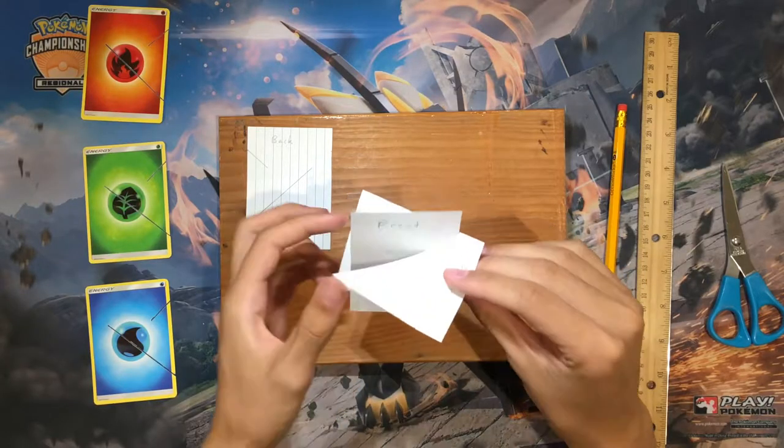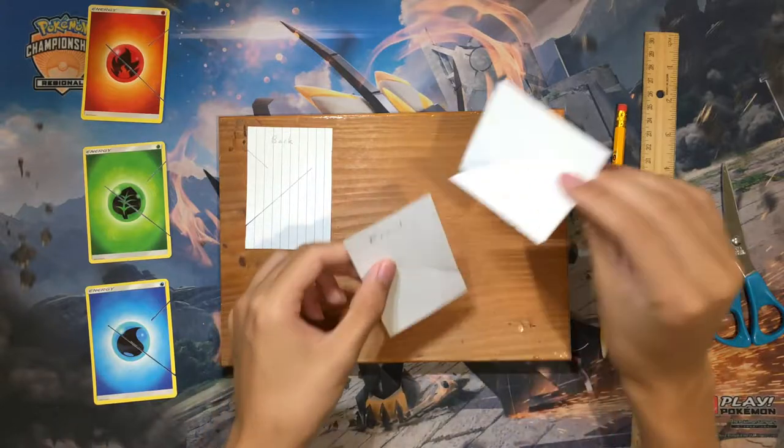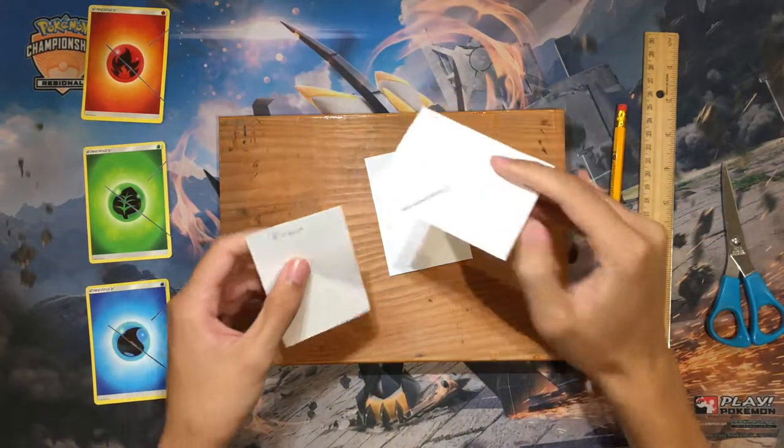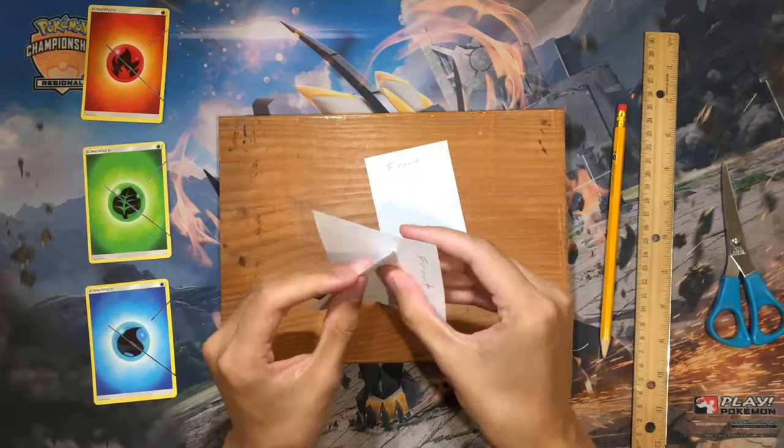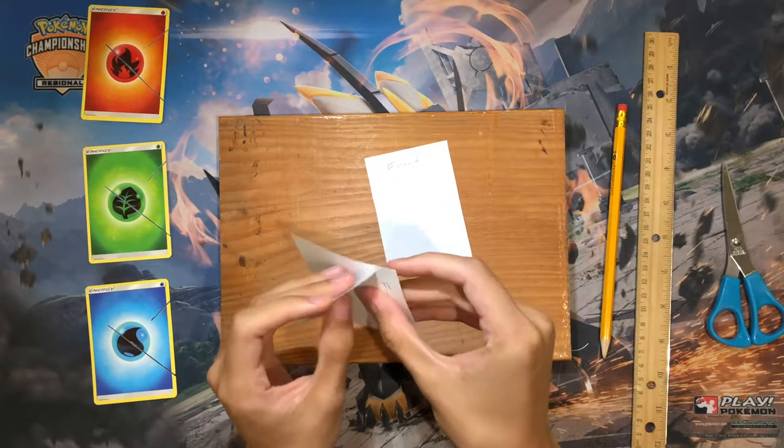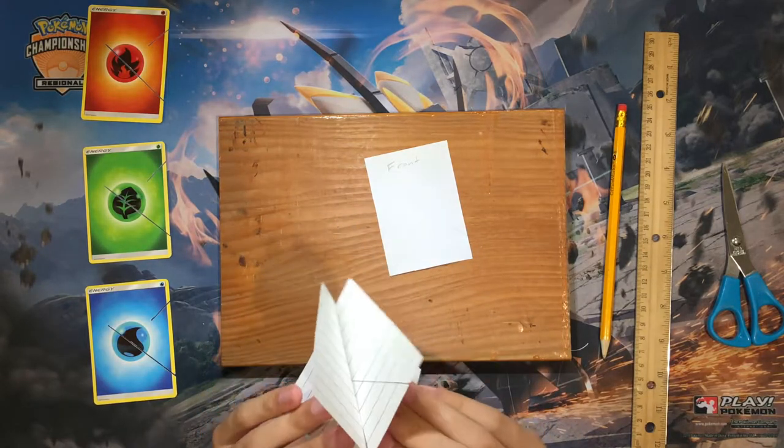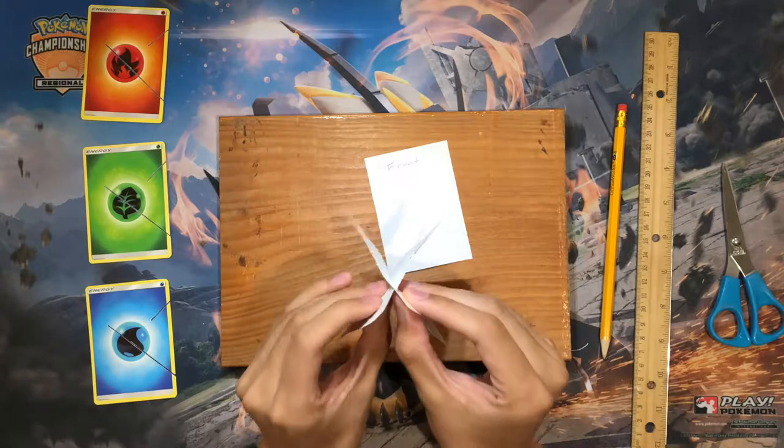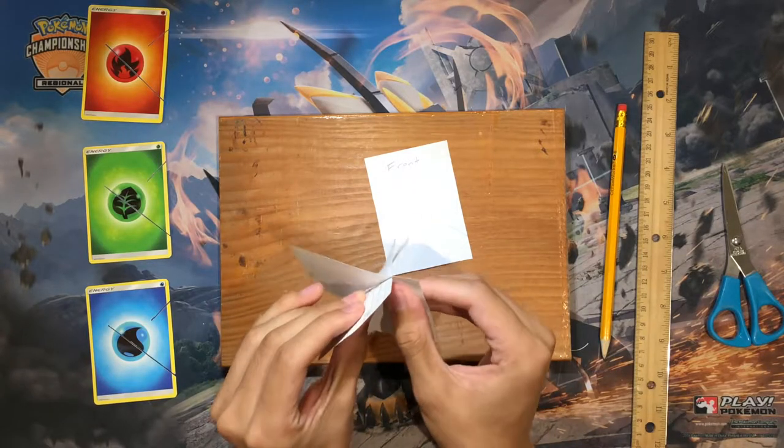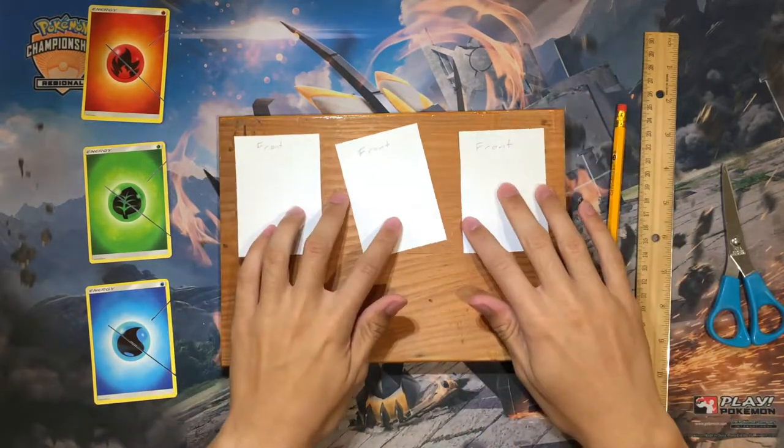So that's how we know our cuts are the correct length. So you just do that with all three of them. Make sure they're all right. Yeah, this one's all right. And then just tweak it until you have it how you like it.